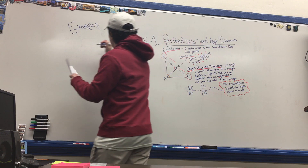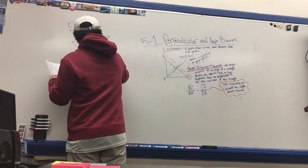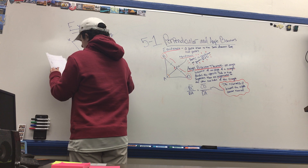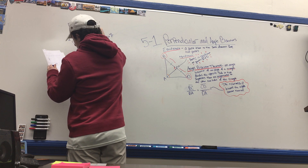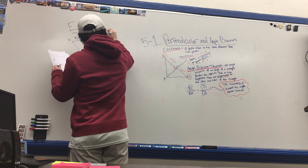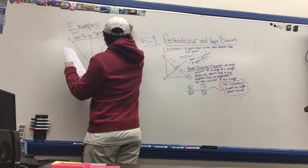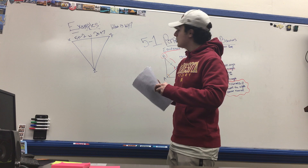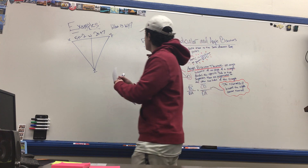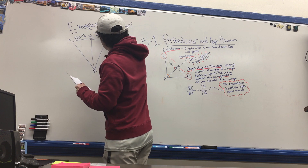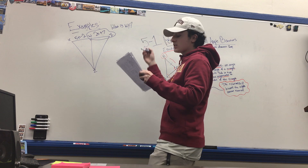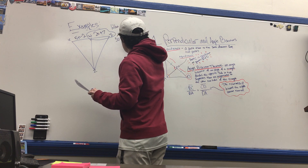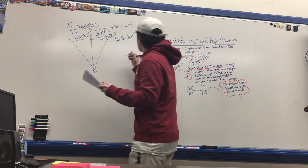For example 2, we have a different triangle but use the same approach. We have the expressions 5n minus 2 and 2n plus 7, and we are looking for WY. We identify where WY is on the triangle — W is equidistant to X and Y.